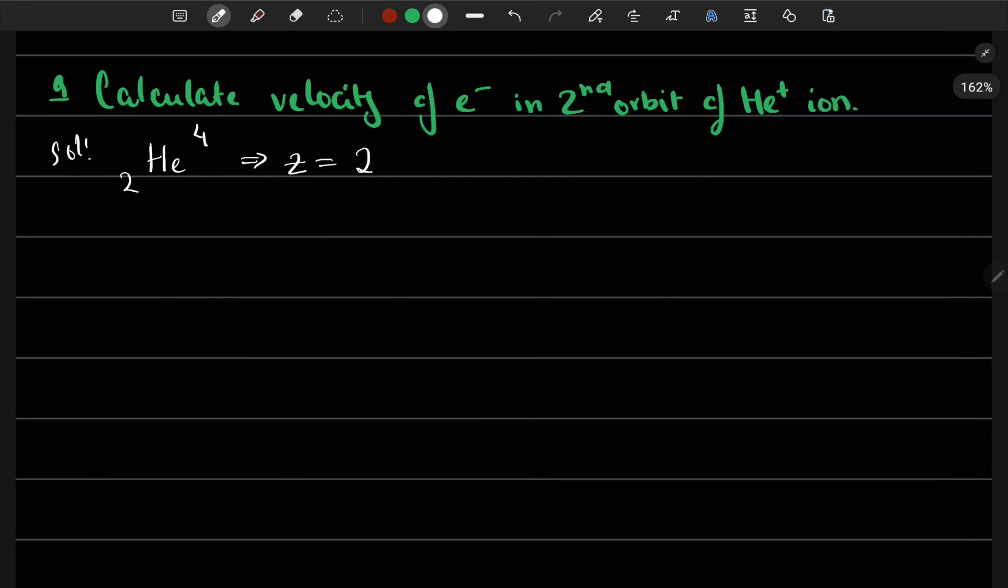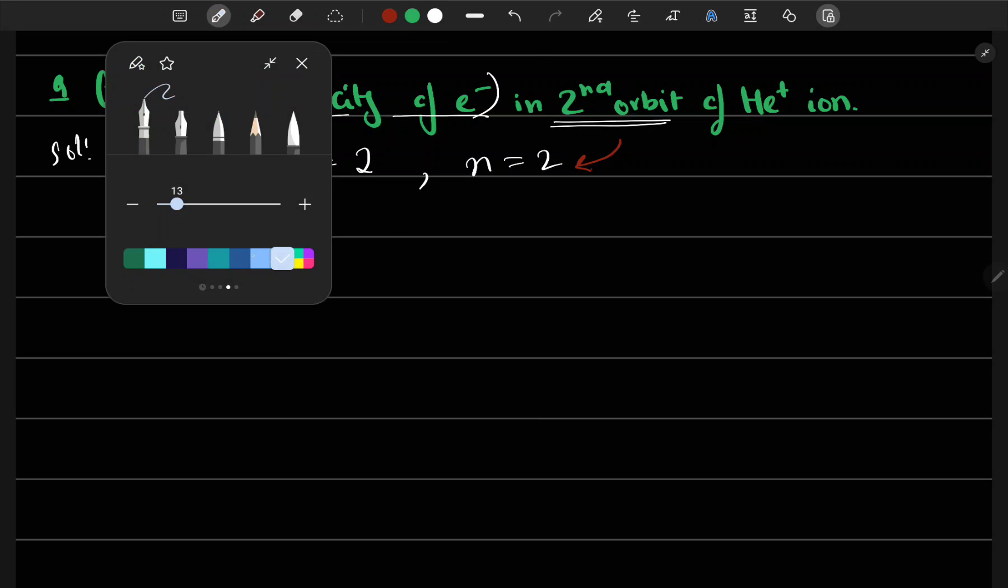Now what we do here is we have to calculate the velocity of electron in the second orbit. So n is equal to 2.